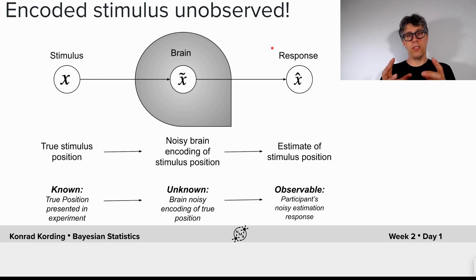But let's think about the models that we had so far. What we did so far is we always calculated what's the best response if I know which encoding of the stimulus arrived at the brain. The problem is when I run experiments, I don't know that.